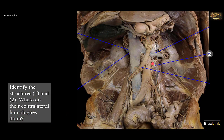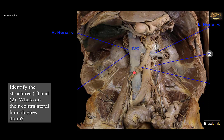Identify the structures one and two — where do their contralateral homologues drain? This is a view of the posterior abdominal wall, showing the kidneys, especially the left kidney. You can see the structures at the hilum of the kidney. The most anterior structure is the vein — this is the left renal vein. Here is the right renal vein, and you can see that both right and left renal veins are tributaries of the inferior vena cava. Because the inferior vena cava is located a little to the right of the midline, the left renal vein is longer than the right, as it has to cross the midline in front of the aorta to reach the inferior vena cava. Note that the left renal vein crosses in front of the aorta just inferior to the origin of the superior mesenteric artery.